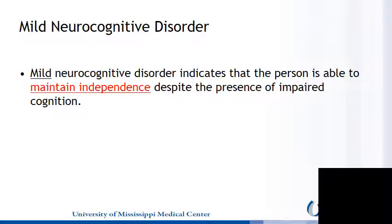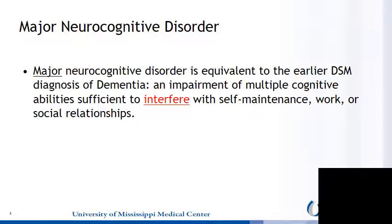A mild neurocognitive disorder diagnosis indicates that the person is able to maintain independence despite the presence of impaired cognition. In a major neurocognitive disorder, we see the equivalence of the earlier DSM diagnosis of dementia — that is, an impairment of multiple cognitive abilities sufficient to interfere with self-maintenance, work, or social relationships.